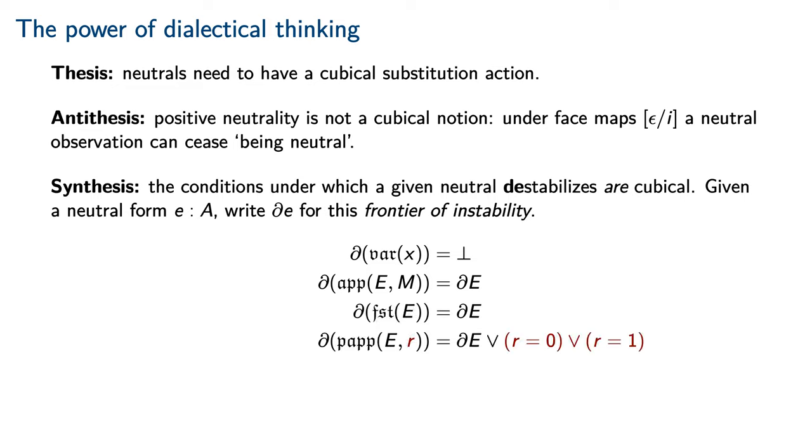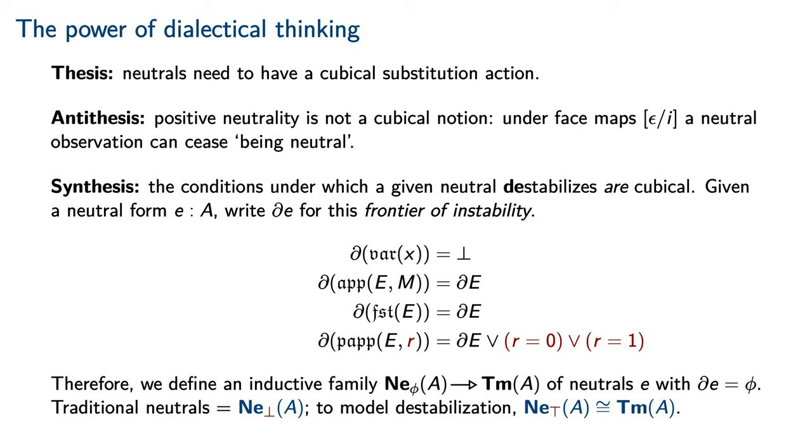Something new, however, occurs with path application. In addition to retaining the frontier of instability of the neutral argument, we glue onto it the boundary of the dimension to which it is applied. Therefore, we may define an inductive family of neutrals with frontier of instability φ.